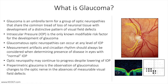This creates a neuroretinal rim that you can see here around the optic nerve, as well as the cup, which I'm circling here. We diagnose glaucoma through optic nerve head exam, looking at the size of the cup and width of the neuroretinal rim, as well as other features of the optic nerve.